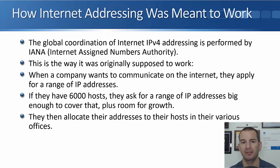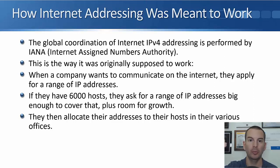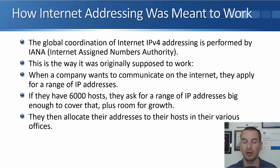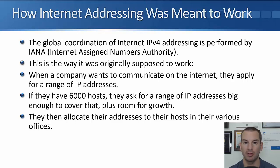The original way that IPv4 addressing was meant to work: when a company wanted to communicate on the internet they would apply for a range of IP addresses. The global assignment of IP addresses is handled by IANA, that stands for the Internet Assigned Numbers Authority. They assign large blocks of addresses to the local authorities in different regions. So a company would apply to their local authority to get a range of public IP addresses — if they had 6,000 hosts, for example, they would ask for a range big enough to cover that plus some room for growth. That company would then allocate those addresses to their hosts in their different offices.